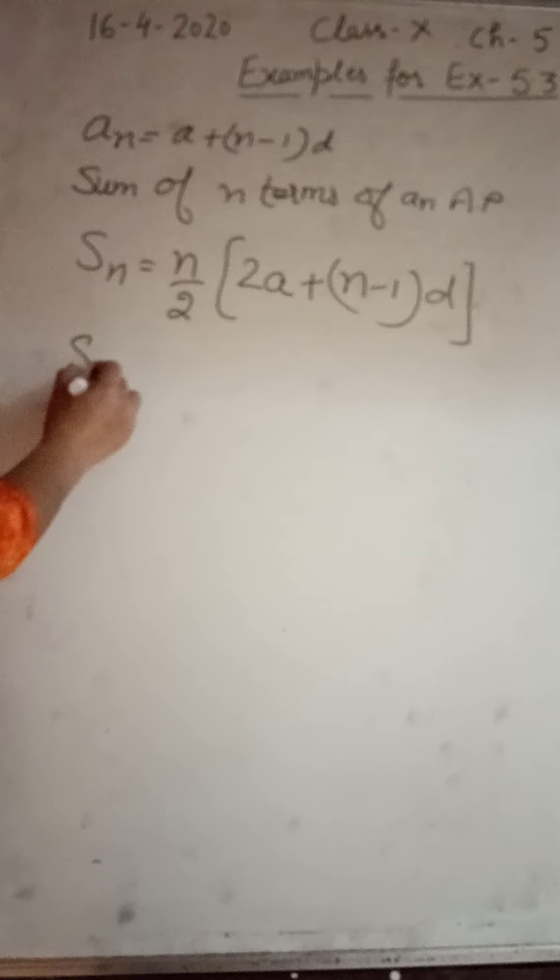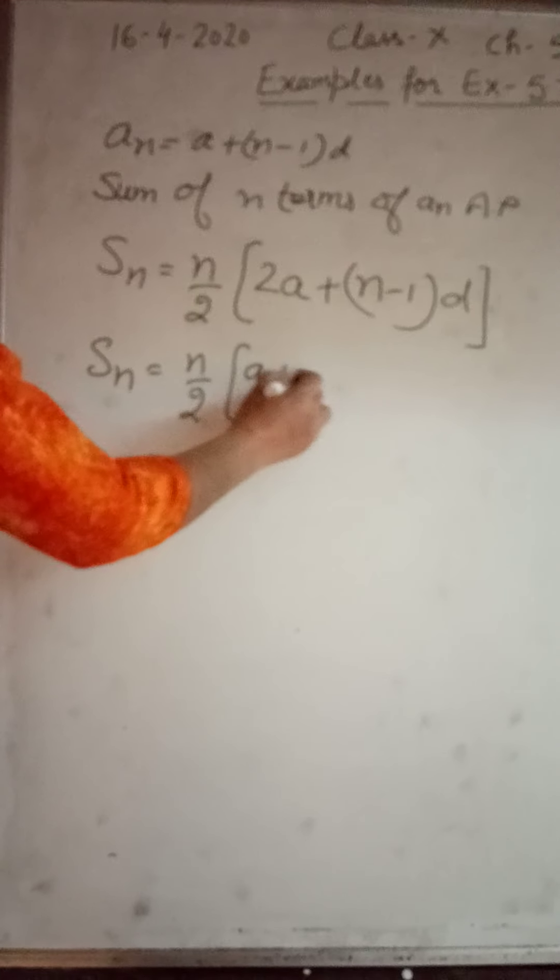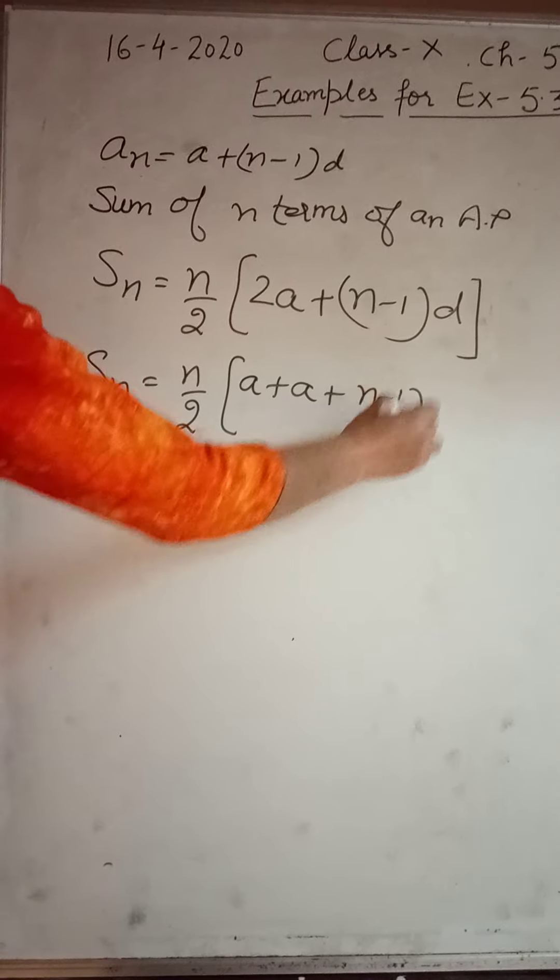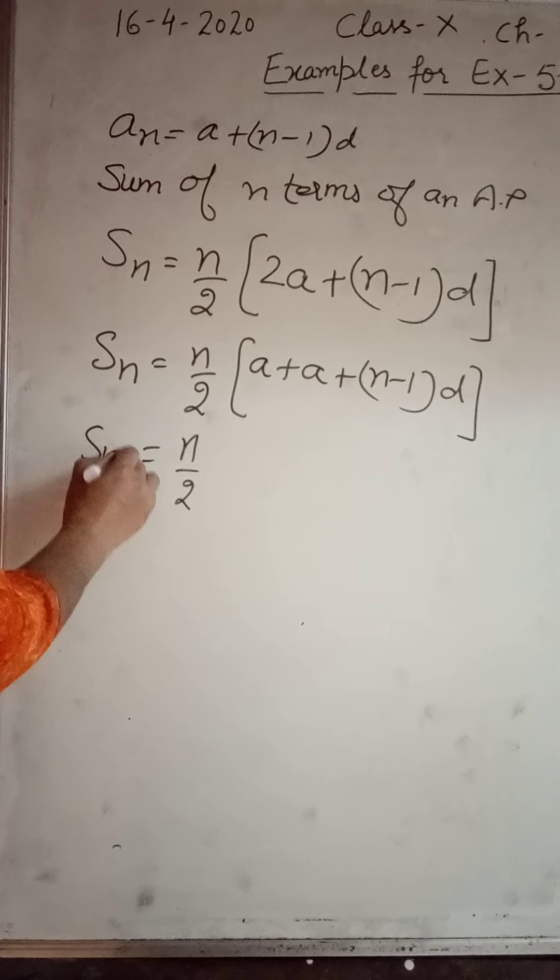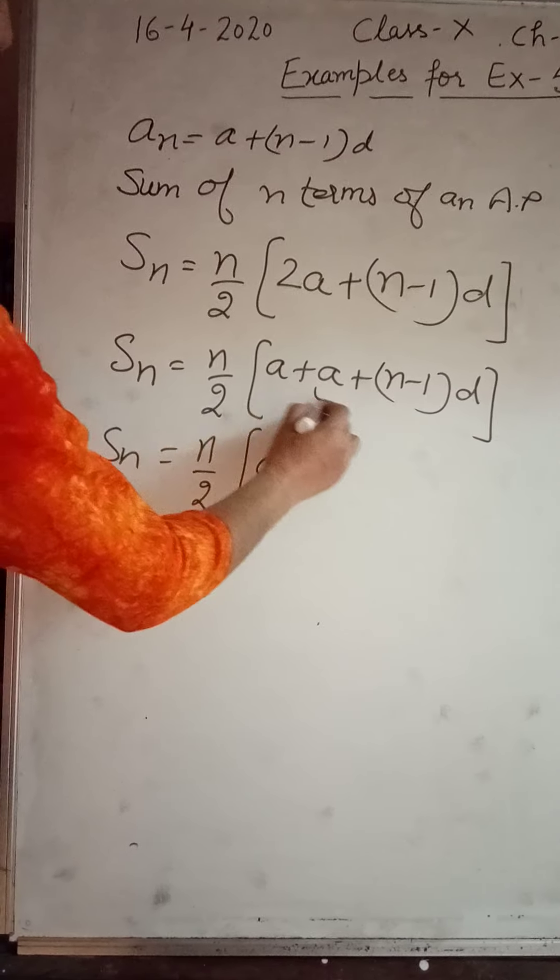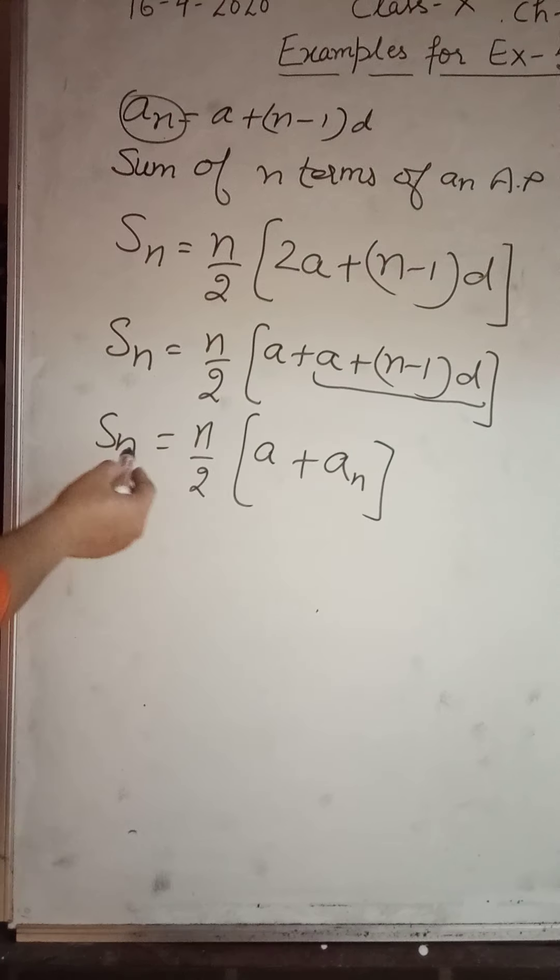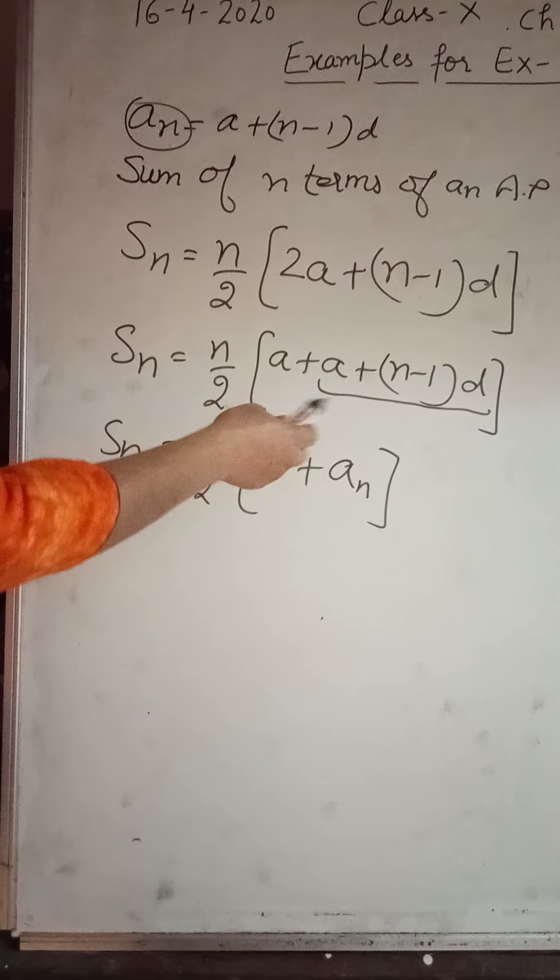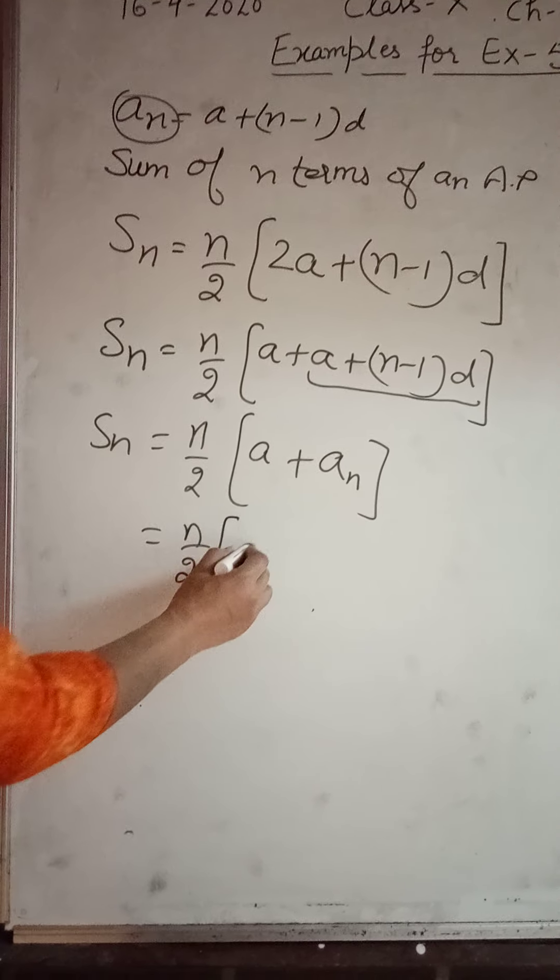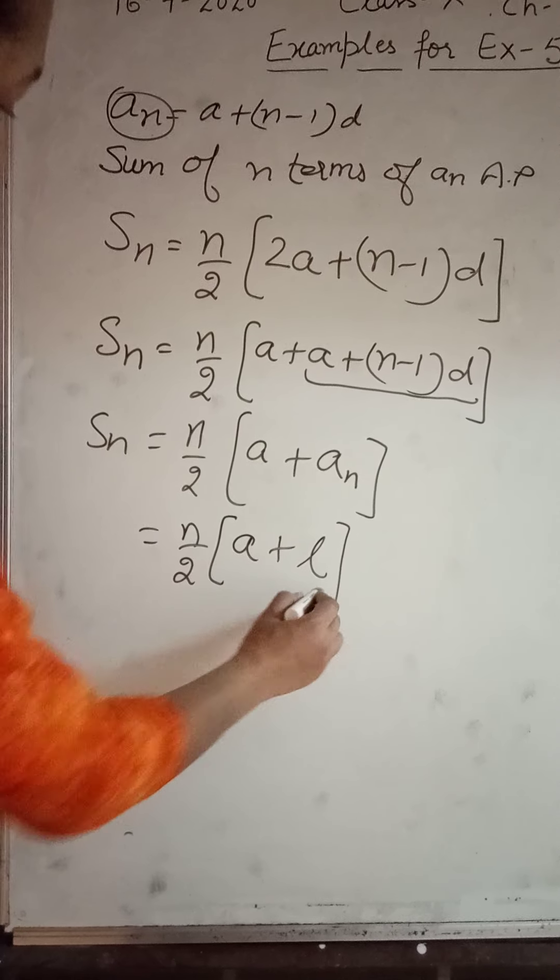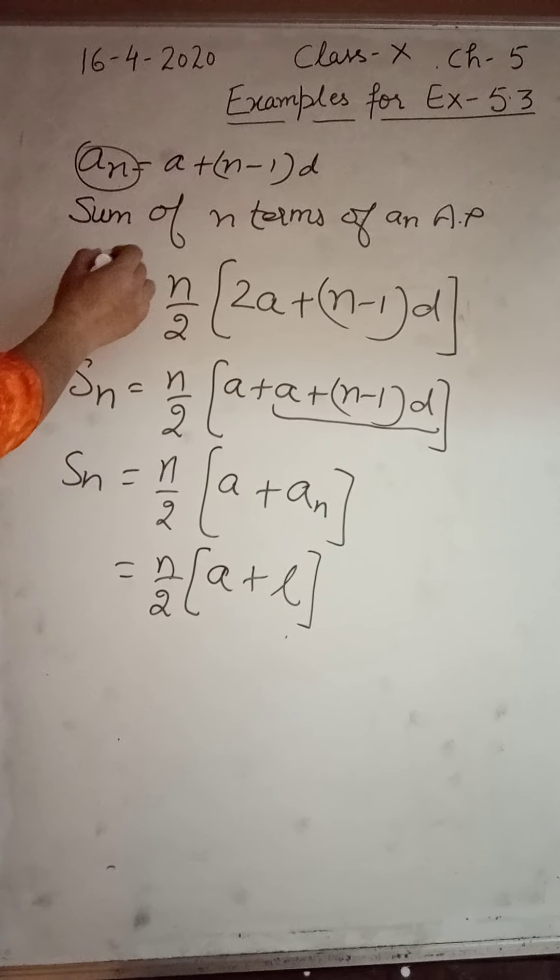You can also say, if instead of 2a, I write a plus a and this thing as this, you see this a will come in place of this. Can we use this thing? Yes, we can write a_n. So one more formula of S_n can be used like this, or we can write it like this: n by 2, a plus l. L, I have already told, stands for last term. So we have to learn this formula for finding sum of n terms.